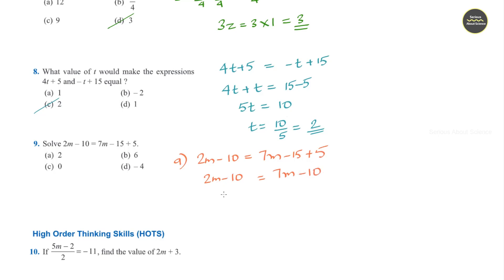Taking this 2m to RHS and -10 to LHS. So -10 when it comes, it becomes 10 minus 10 is equal to 7m minus 2m. Or it is 0 is equal to 5m, or m is 0 divided by 5 is 0. Option c.